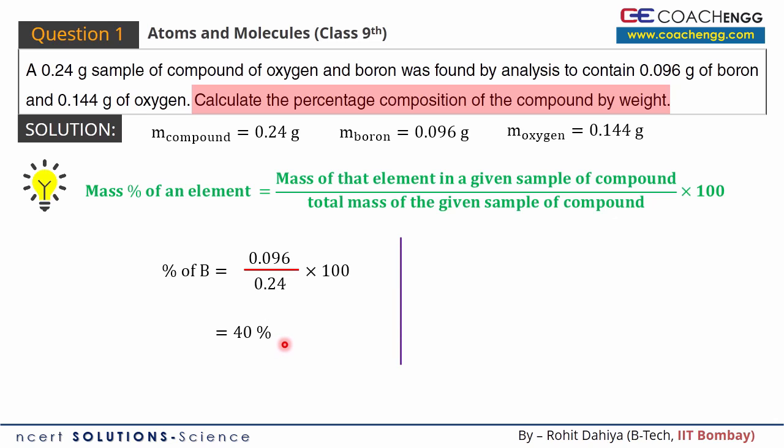Similarly, oxygen is also in your compound. For oxygen's percentage, the mass is 0.144 grams and total compound sample is 0.24 grams. Oxygen's mass divided by total compound's mass, multiplied by 100. After this calculation, we see the answer is 60%. So in the given compound, boron was 40% by mass and oxygen was 60% by mass.